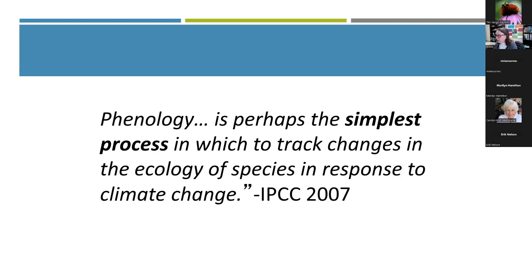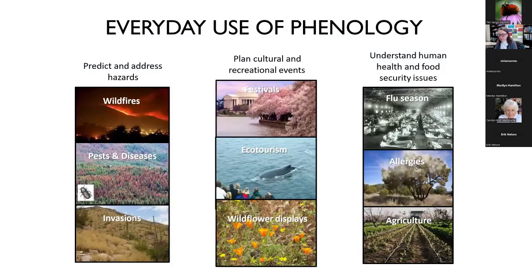The Intergovernmental Panel on Climate Change in 2007 used phenological information to convince policymakers that something was happening in the environment driven by increasing temperatures. Their report stated that phenology is perhaps the simplest process in which to track changes in the ecology of species in response to climate change. It's also very accessible — kids quickly understand that if temperature rises, these things happen earlier.